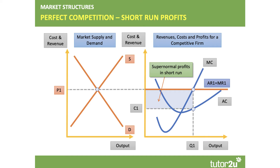The market price set by the market is P1, and that price for this profit-maximizing firm is sufficient to make quite a hefty supernormal profit, shown by the shaded area in blue, because the price P1 is above the cost per unit C1 at the profit-maximizing equilibrium.